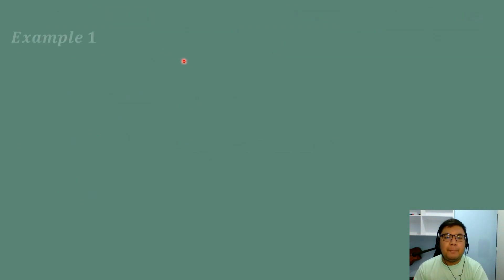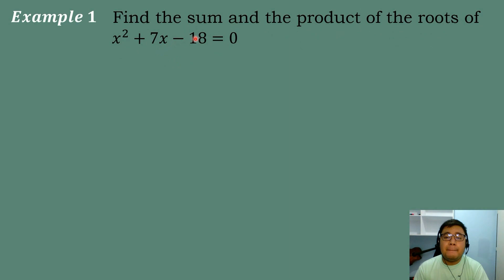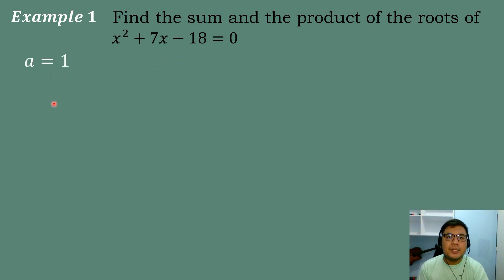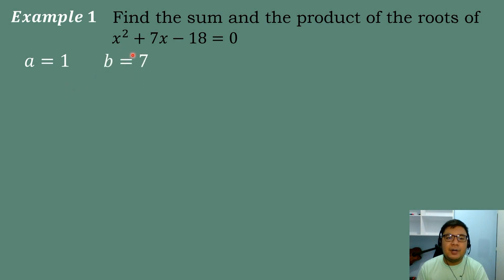Let's have our first example. Find the sum and the product of the roots of the quadratic equation x squared plus 7x minus 18 is equal to zero. First, we will identify the numerical coefficient of each term. The numerical coefficient of the quadratic term x squared is equal to 1. The numerical coefficient of the linear term 7x is equal to 7. And the numerical coefficient of the constant term is equal to negative 18.